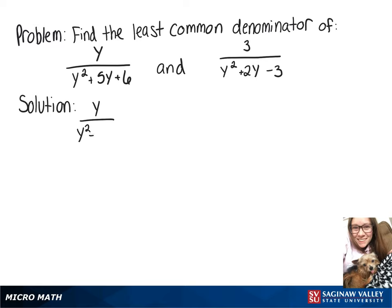We'll start by factoring our denominators. So y over y squared plus 5y plus 6 is going to be equal to y over y plus 2 times y plus 3.